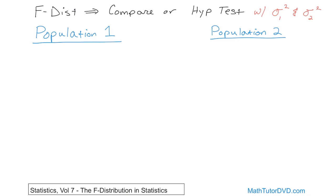We can take the mean of those values and come up with a mean for population one and a mean for population two. We've already done all the work in hypothesis testing where we're comparing population means, so review that if it's not clear. Now we're moving on to talking about the difference in variance between population one and population two.